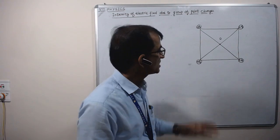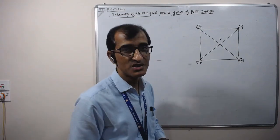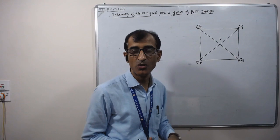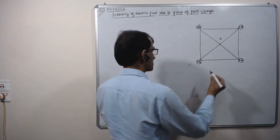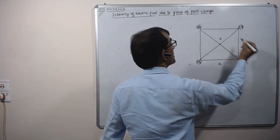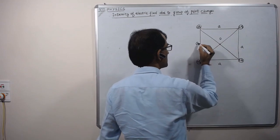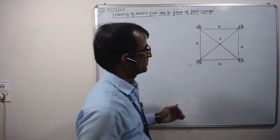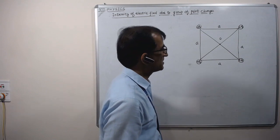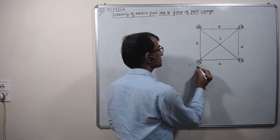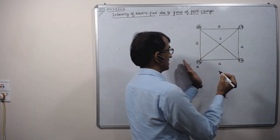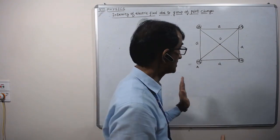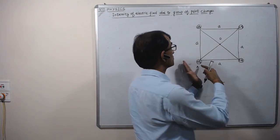Next problem: charges each of magnitude plus q are placed at the corners of a square of side a. Find out the net electric field due to these charges at the center O, which is the intersection of the diagonals. Due to charge A, the field at O is away from the charge, eA. Due to charge B, it is away from the charge, eB. Due to charge C, away from the charge, eC. Due to charge D, in the outward direction, eD.